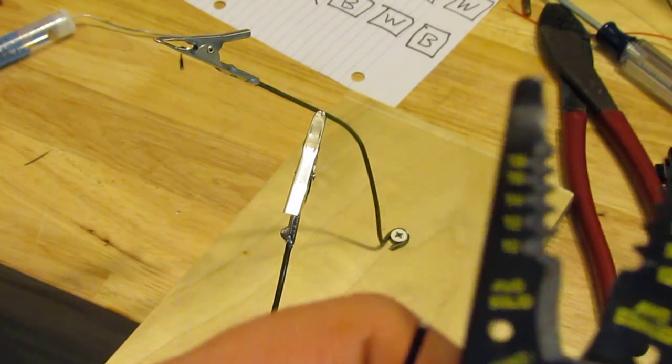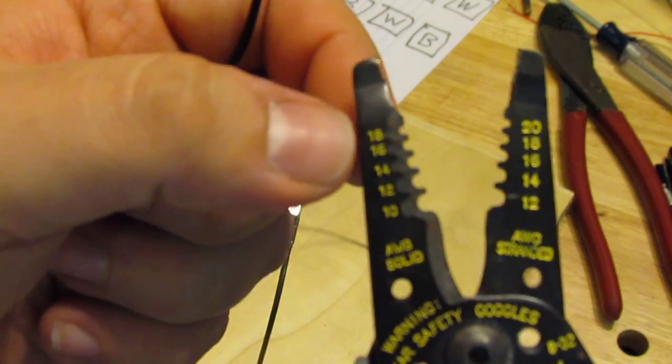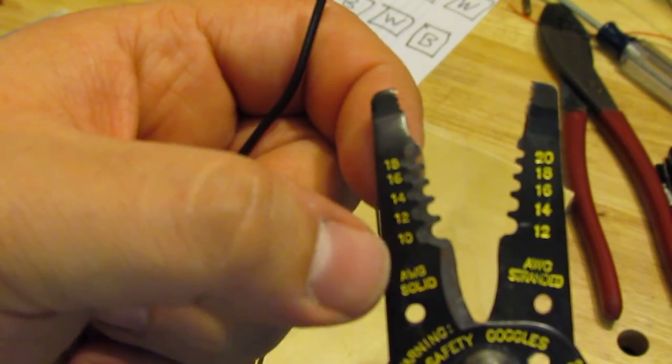There's two different sides on your wire stripper if you do get this type. There's 18, 16, 14, 12, and 10. This is the AWG solid side.